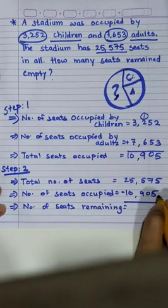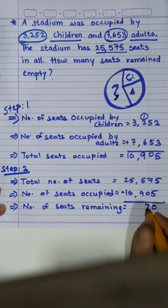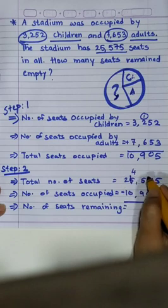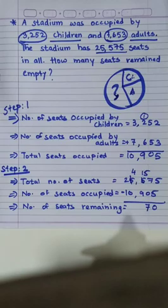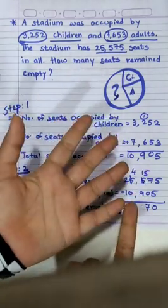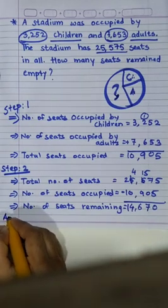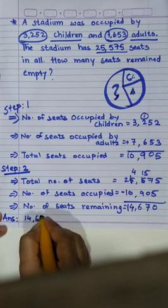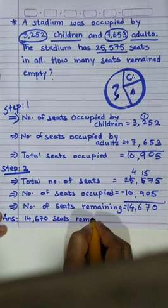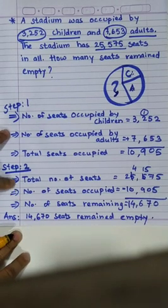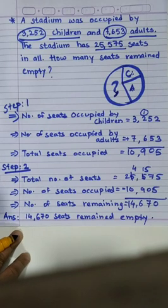Total number of seats is equal to 25,575. Number of seats occupied is 10,905. Number of seats remaining is 25,575 minus 10,905. 5 minus 5 is 0; 7 minus 0 is 7; 5 minus 9 is not possible, so we borrow — 15 minus 9 is 6; 4 minus 0 is 4; 2 minus 1 is 1. So the answer is 14,670 seats remained empty. This was a two-step sum including both addition and subtraction. Practice on your own — all the best, enjoy learning at home!